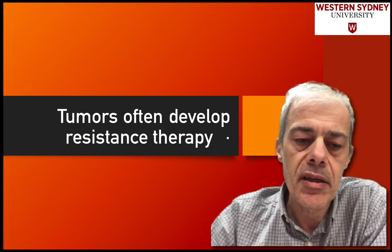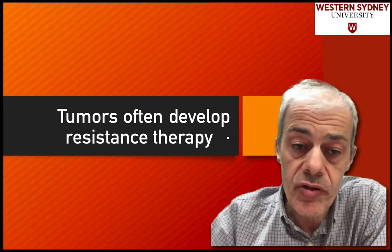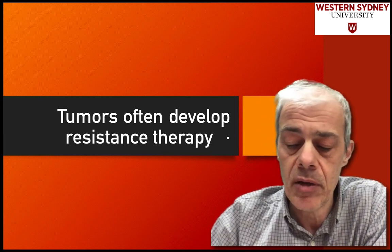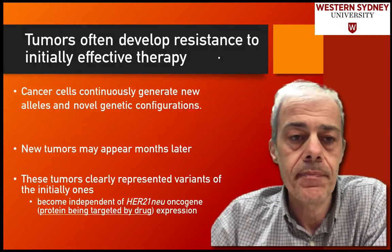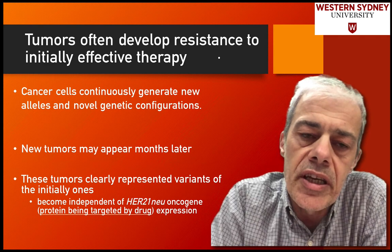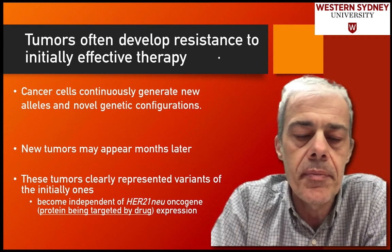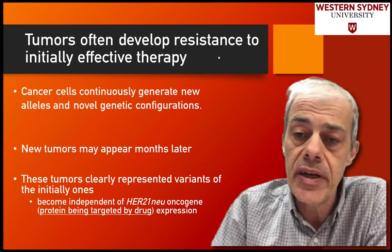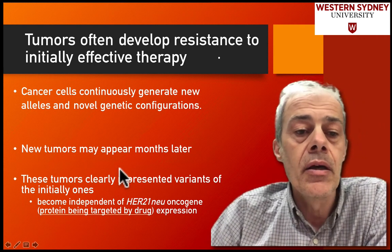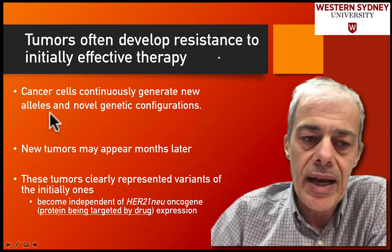Let's have a quick look at some of the mechanisms that exist for cells to develop resistance to drug therapy. Tumors often develop a resistance to what was initially an effective therapy, and this has been confounding for drug design — initially the drug is effective, and then suddenly the cell responds and becomes resistant.